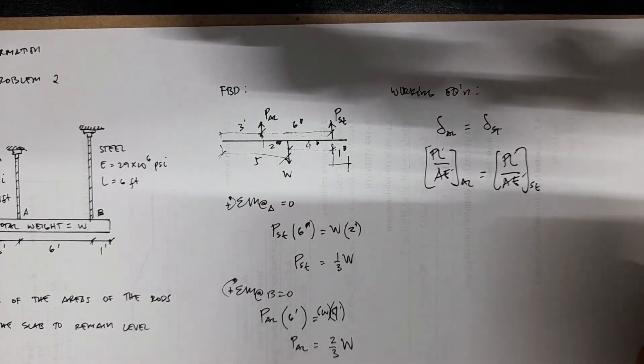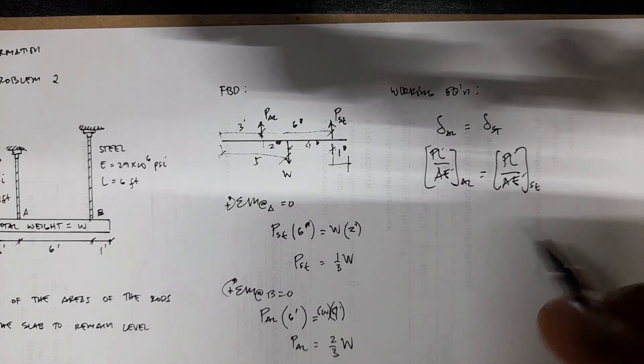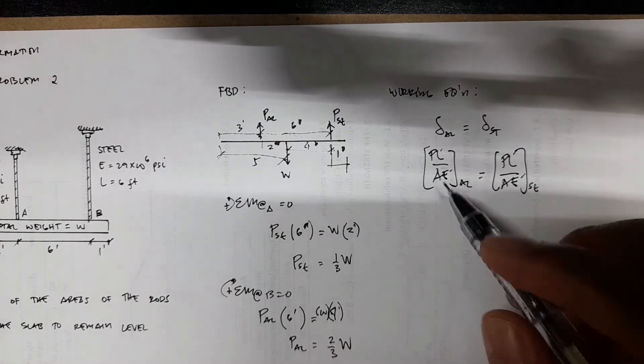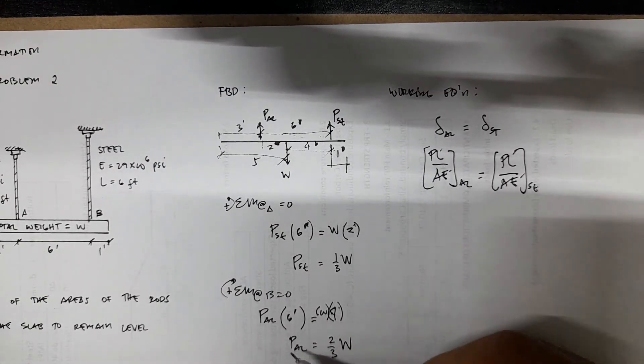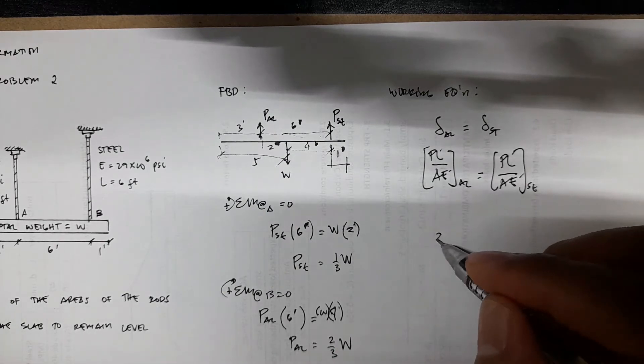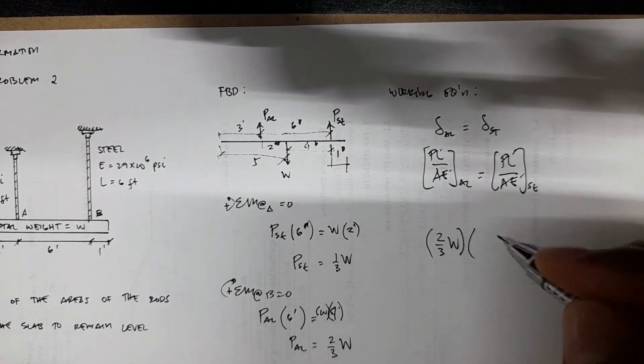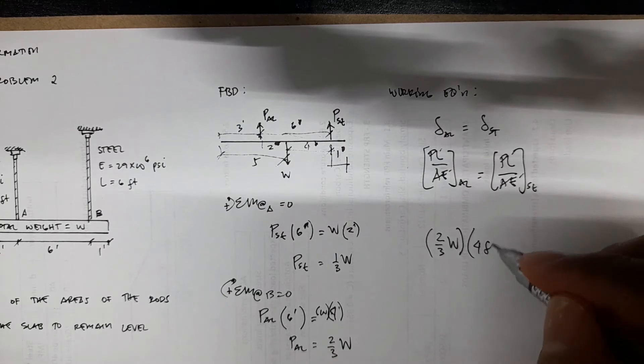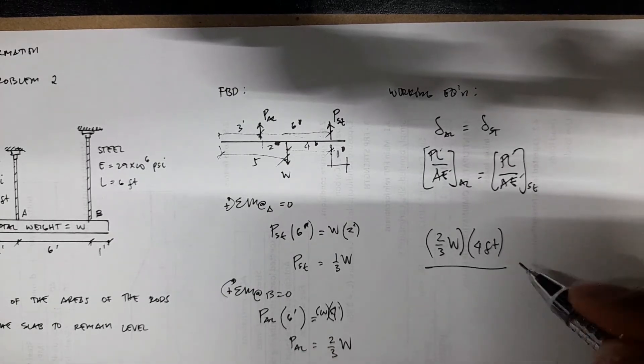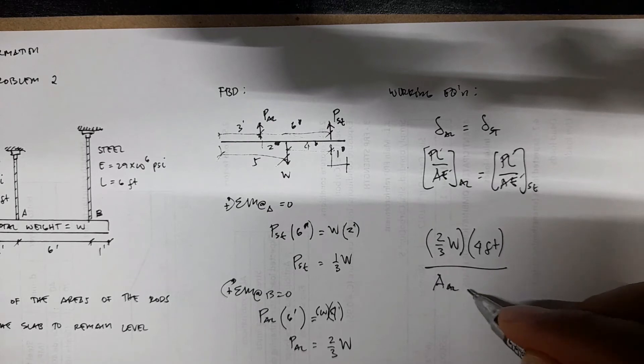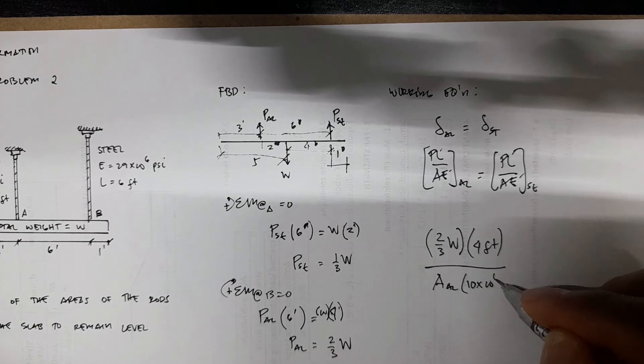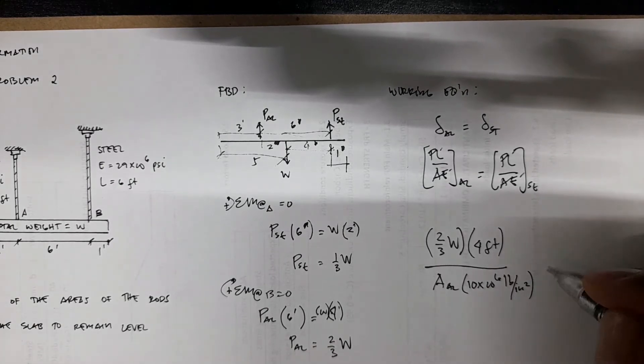We can substitute it to the equation. You have P aluminum, which is just two-thirds W times L equals 4 feet, divided by the area aluminum, and then we have E, which is 10 times 10 to the 6 pounds per square inch. Don't worry about the units, they will cancel out.